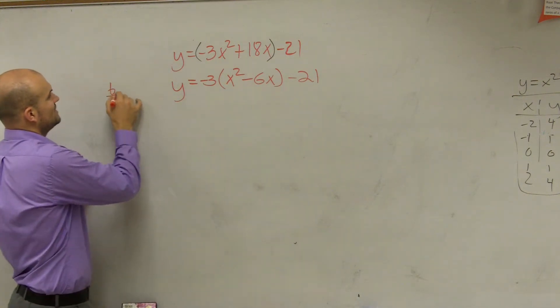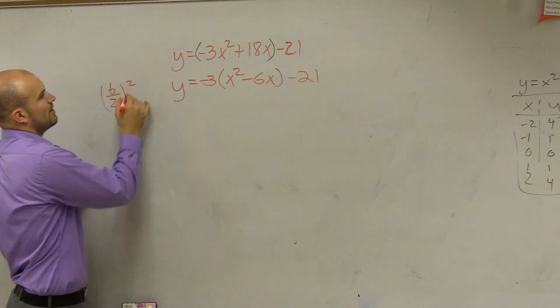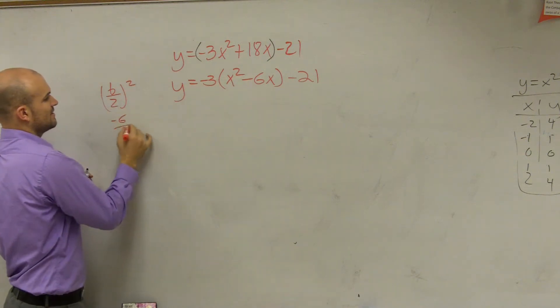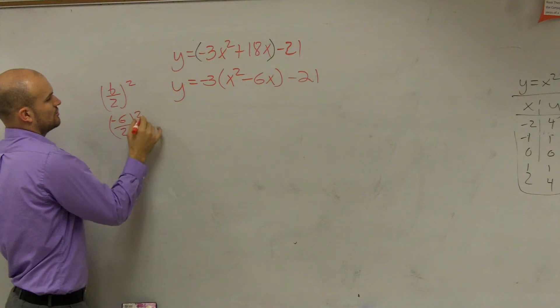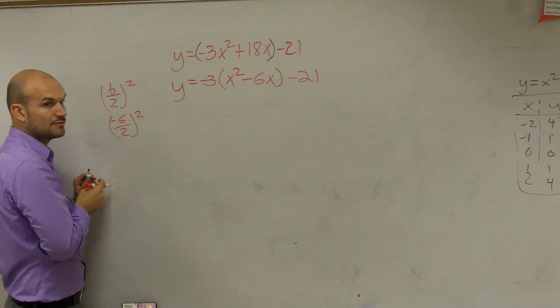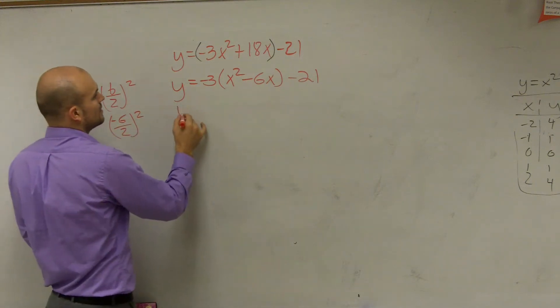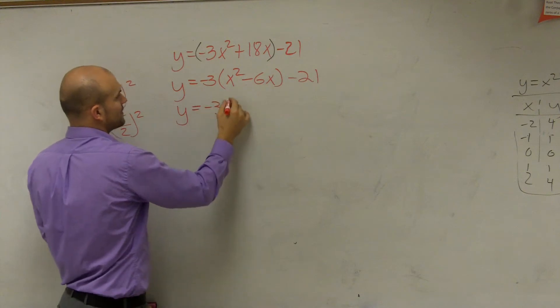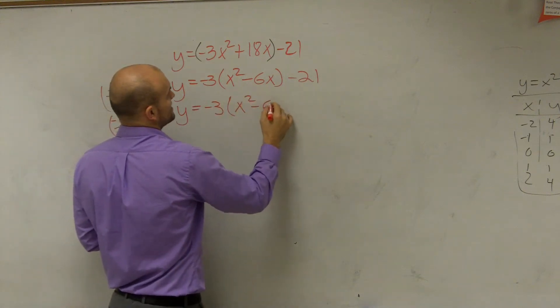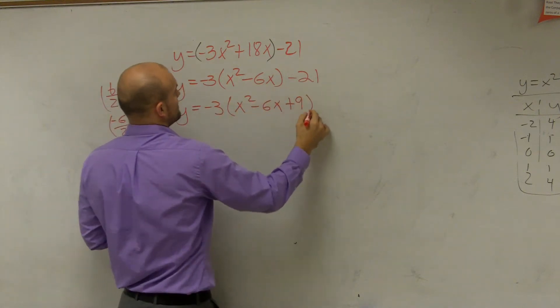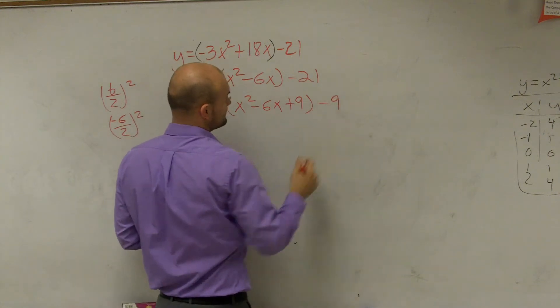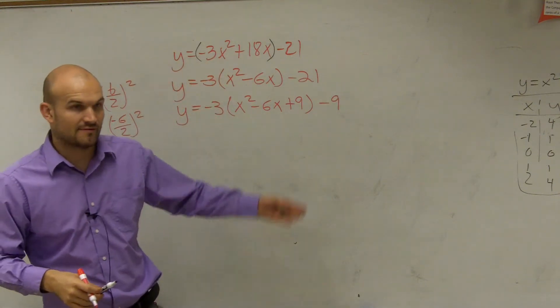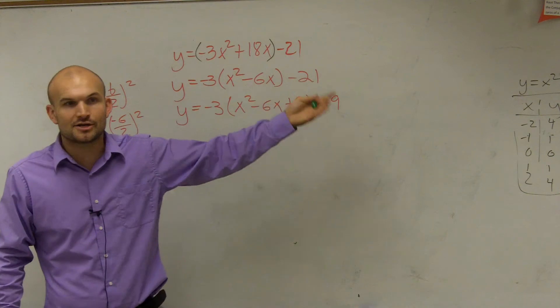So you do b divided by 2 squared. Negative 6 divided by 2 squared. Negative 6 divided by 2 is negative 3. Negative 3 squared is 9. So y equals negative 3 times x squared minus 6x plus 9 minus 9. Right? Because whenever you add and subtract on the same side, your equation will be the same.